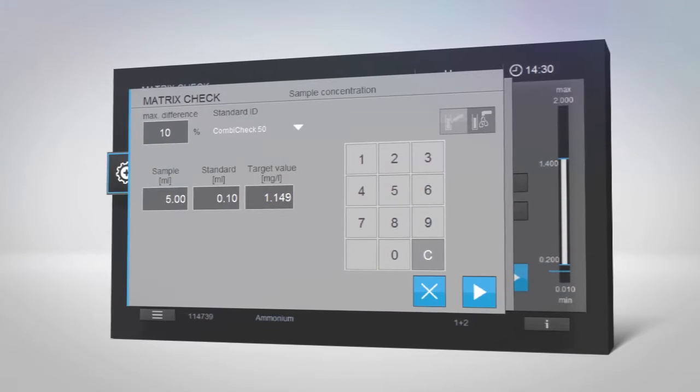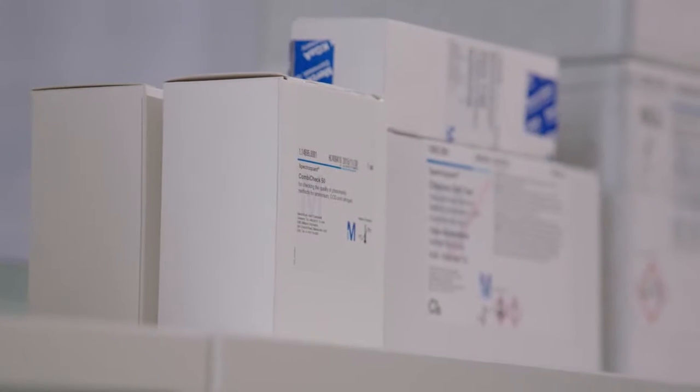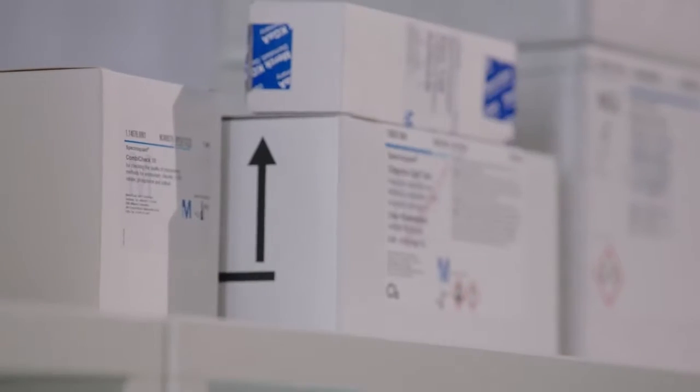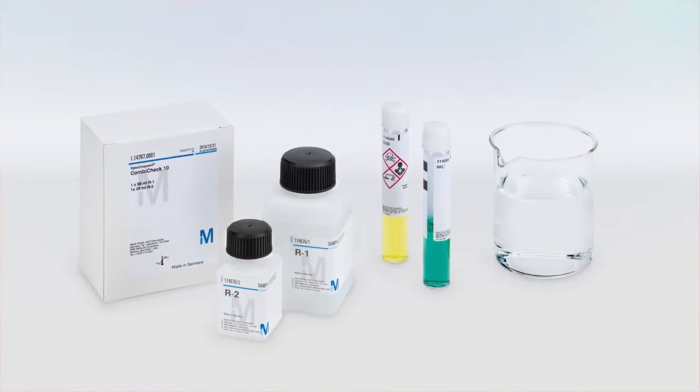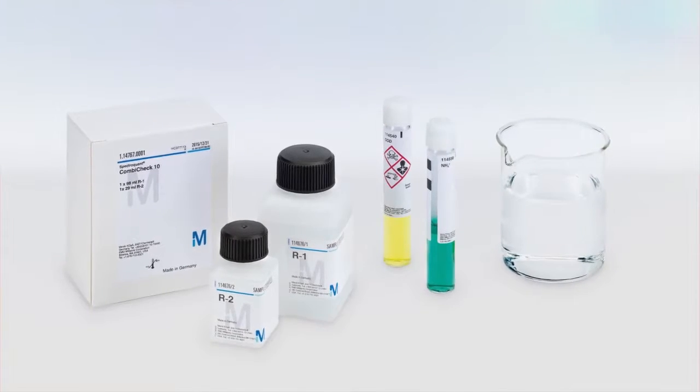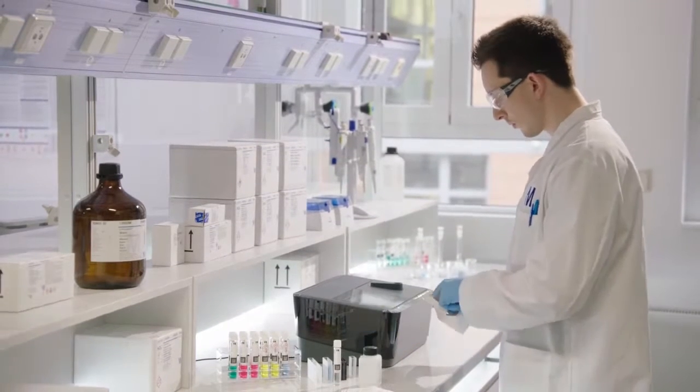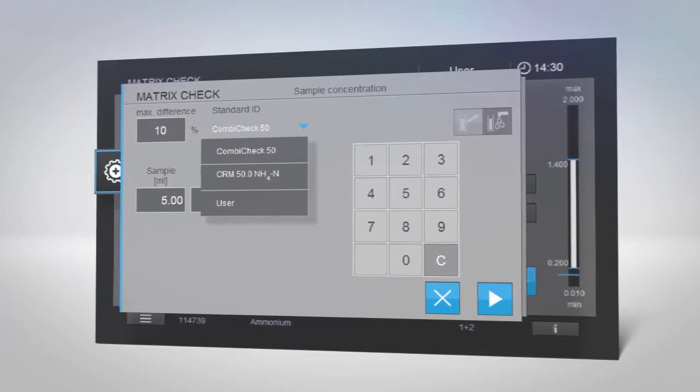A matrix check can be performed through addition or dilution. The process can be streamlined by using the SpectraQuant CombiCheck R2 addition solution or Merck Millipore's ready-to-use CRM standards, which are pre-programmed on SpectraQuant Prove.